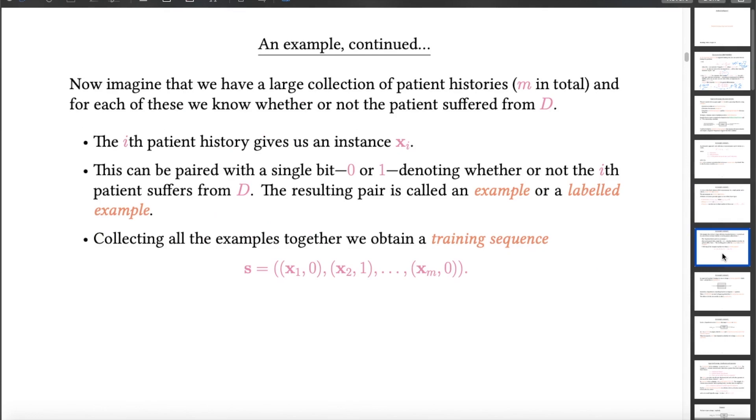Now the next step looks like this. Imagine you have a large collection of patient histories. We'll usually denote the number of these by m. And that for each patient history you know whether or not the patient suffered from D. So the ith patient history gives you an instance vector, a feature vector x sub i, and that can then be paired with a single bit, 0 or 1, which denotes whether or not the ith patient suffered from the disease. That pair is called an example, or in this case to be specific, a labelled example. And if we collect them together for all the patient histories we have, then we have a training sequence. So the training sequence s is just a collection of labelled examples, and a labelled example contains a vector of features and a label.